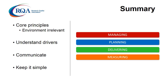In practical terms, it's useful to start a quality system with the essentials and move forward from there. These core principles of managing, planning, delivering and measuring provide structure for any quality system, regardless of the environment or organisation. What is critical is understanding the drivers to implement a quality system so it can be built to meet those needs. It's vital to keep all the stakeholders involved and to keep the system relevant to the circumstances of each individual organisation and to keep the quality system simple.